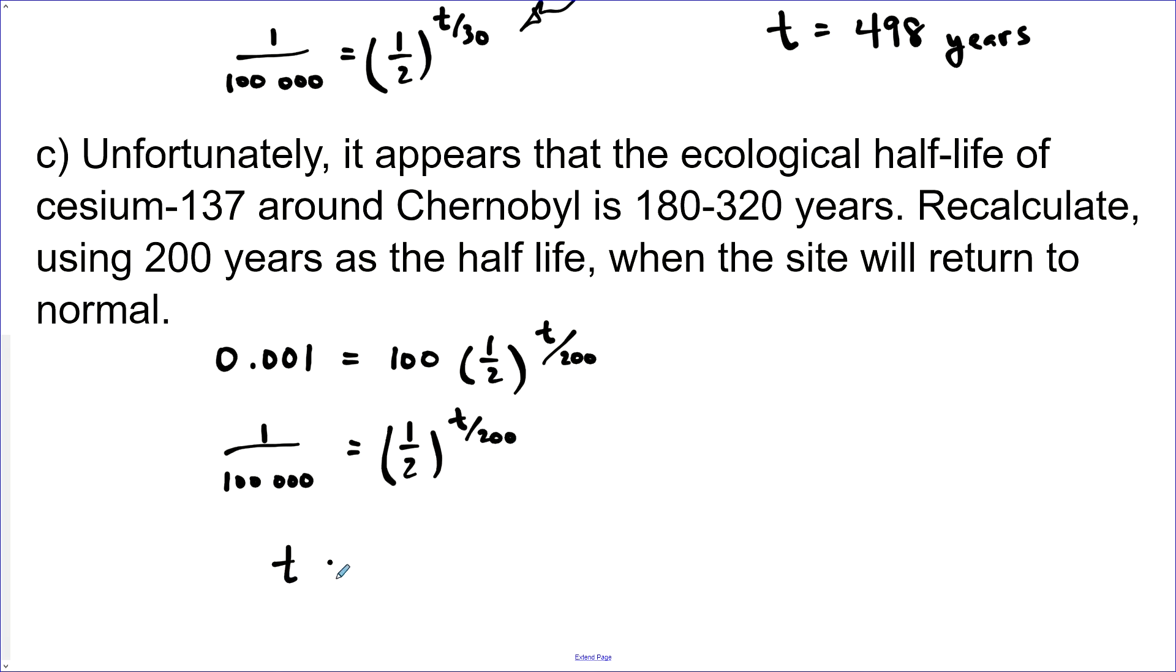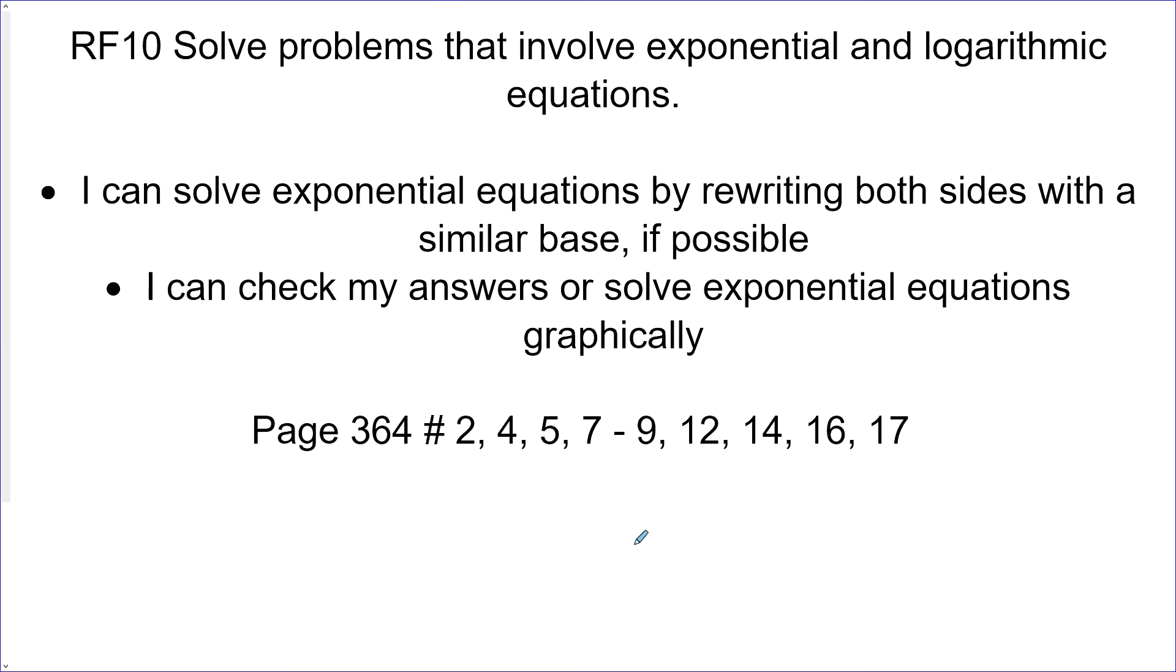And we get that the time is 3,322 years. And then it's all okay. Chernobyl will be perfectly normal. This was part of Relations and Functions 10, solving problems that involve exponential equations. Here are some questions. Try them out. See if you know what you're doing.